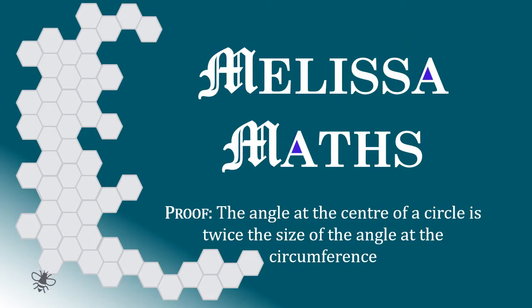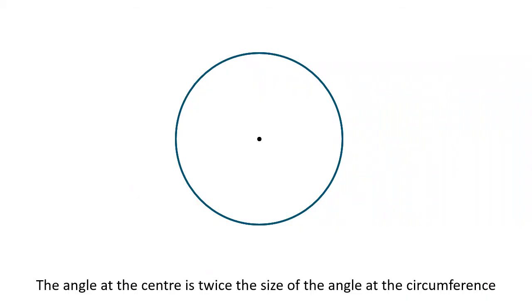The angle at the centre of a circle is twice the size of the angle at the circumference. The angle made from two radii is always double the angle on the circumference made from the same two points.